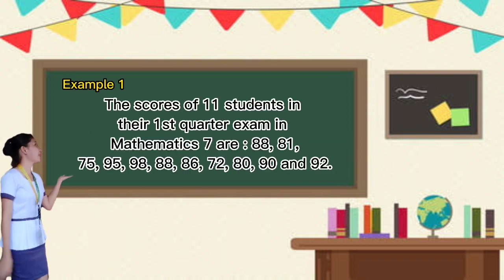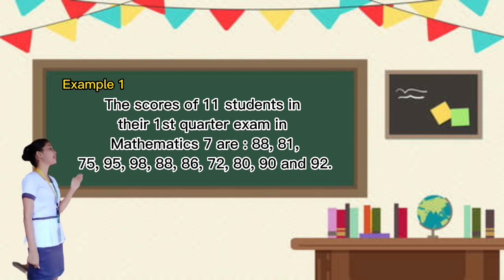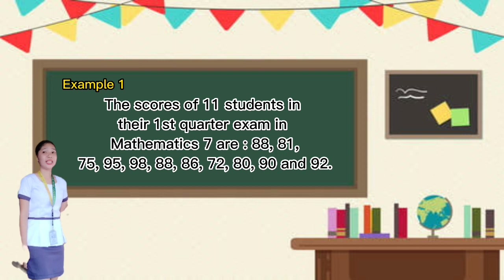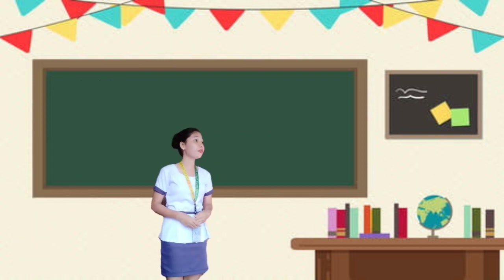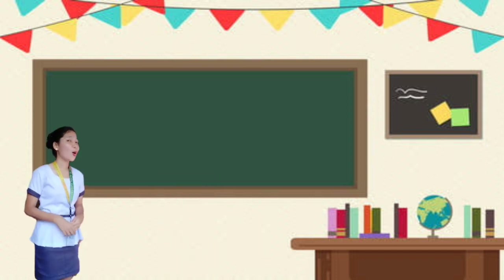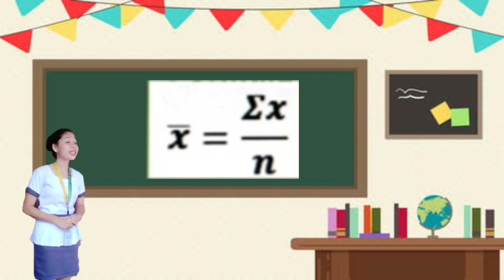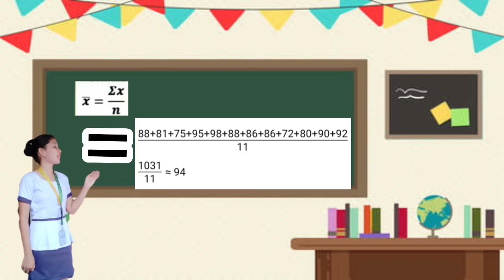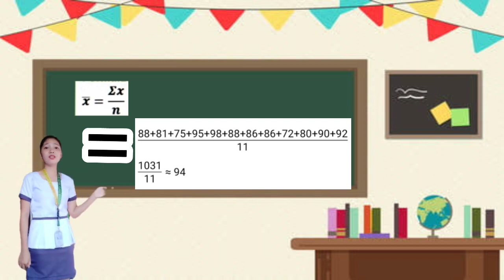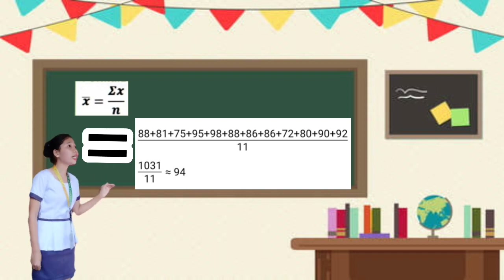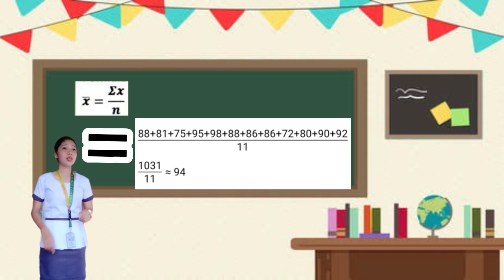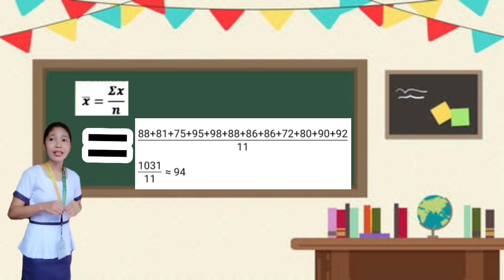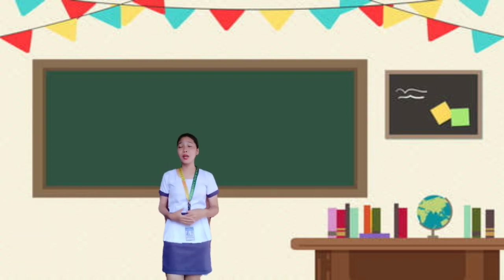We have here an example. The following scores of 11 students in their first quarter exam in Mathematics 7 are: 88, 81, 75, 95, 98, 86, 72, 80, 90, and 92. Let's find the mean. Using the formula x̄ = Σx / n, we substitute: 88 + 81 + 75 + 95 + 88 + 86 + 72 + 80 + 90 + 92, all over 11. That gives us 1,081 over 11, which equals 94. Hence, most of the student scores are close to 94.